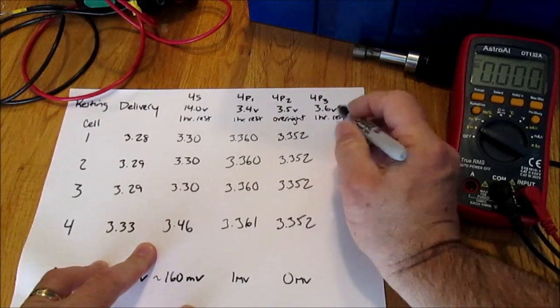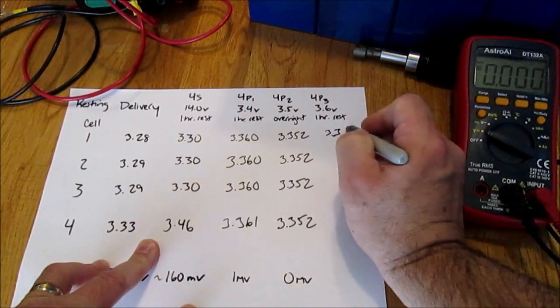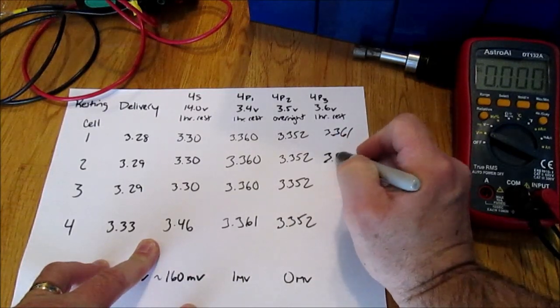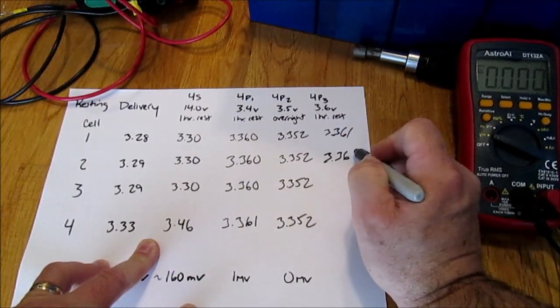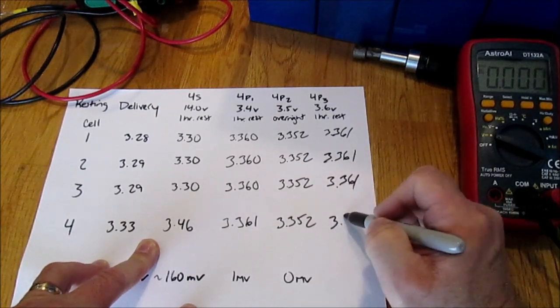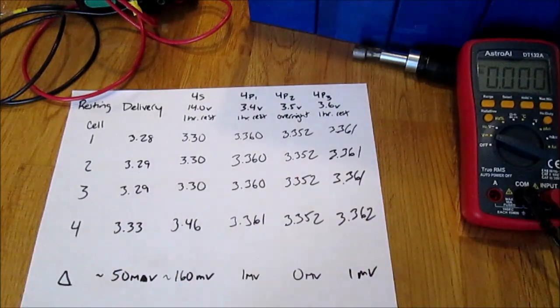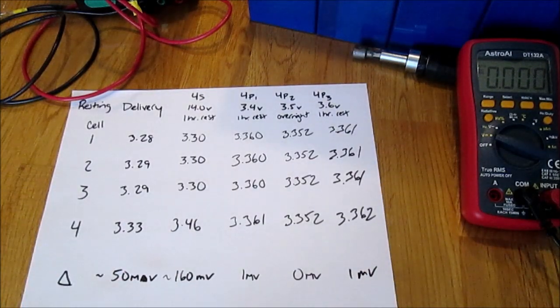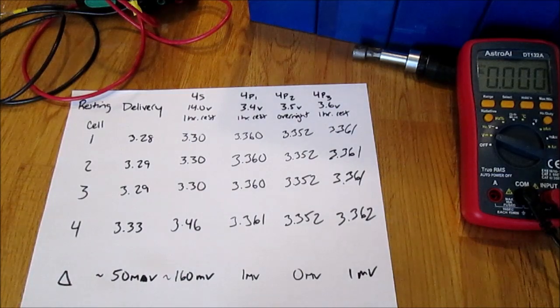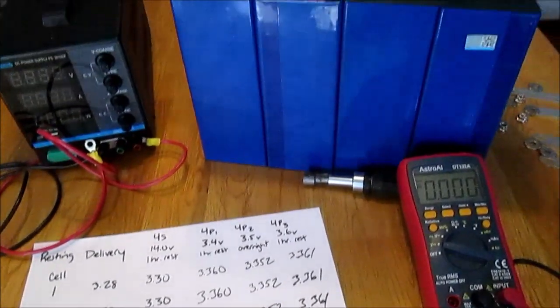As you can see we have achieved a very high state of charge and also a very good balance between these four cells. We're at 3.361, 3.361, 3.361 and 3.362, so a one millivolt difference between the four cells.